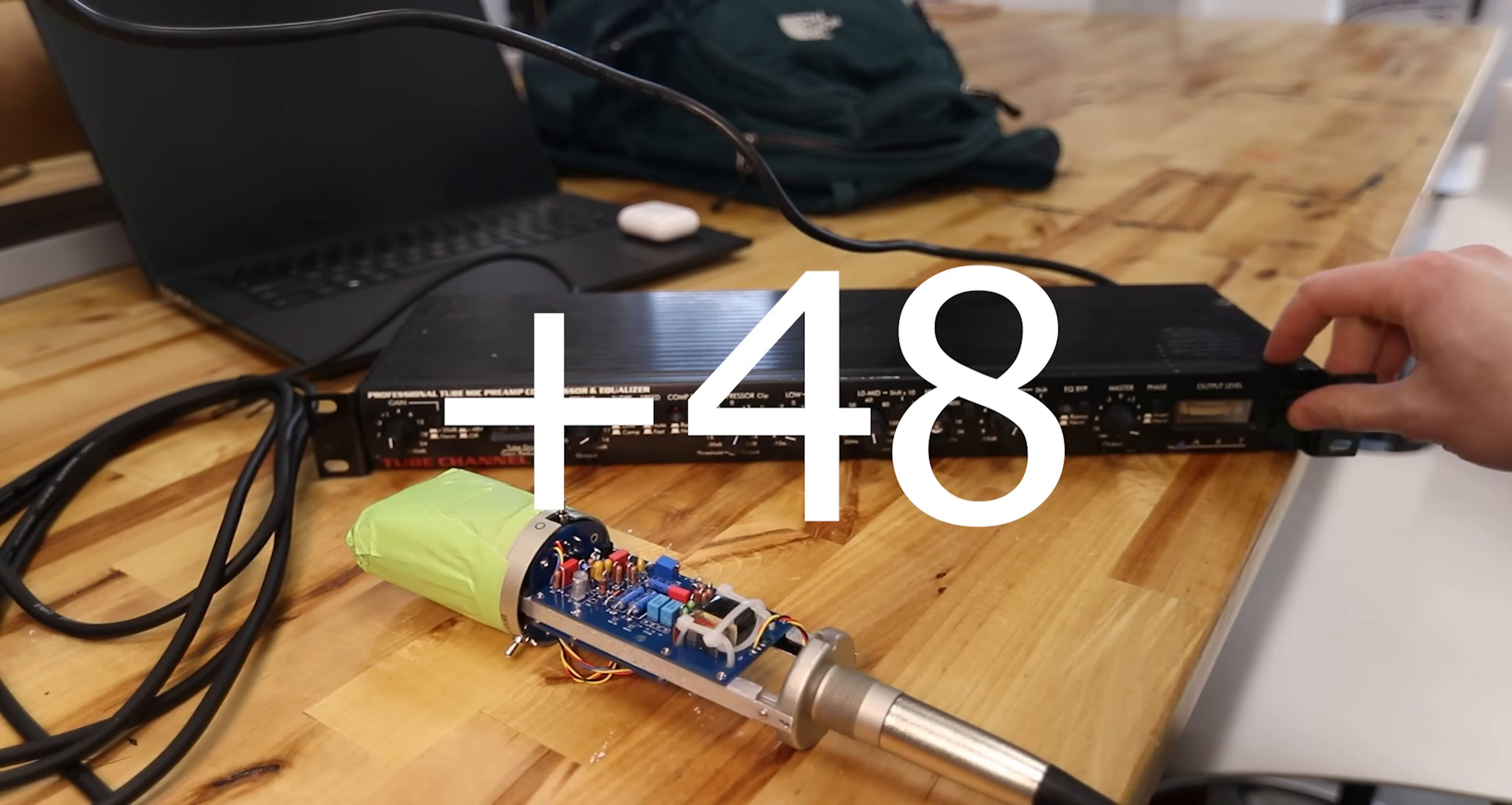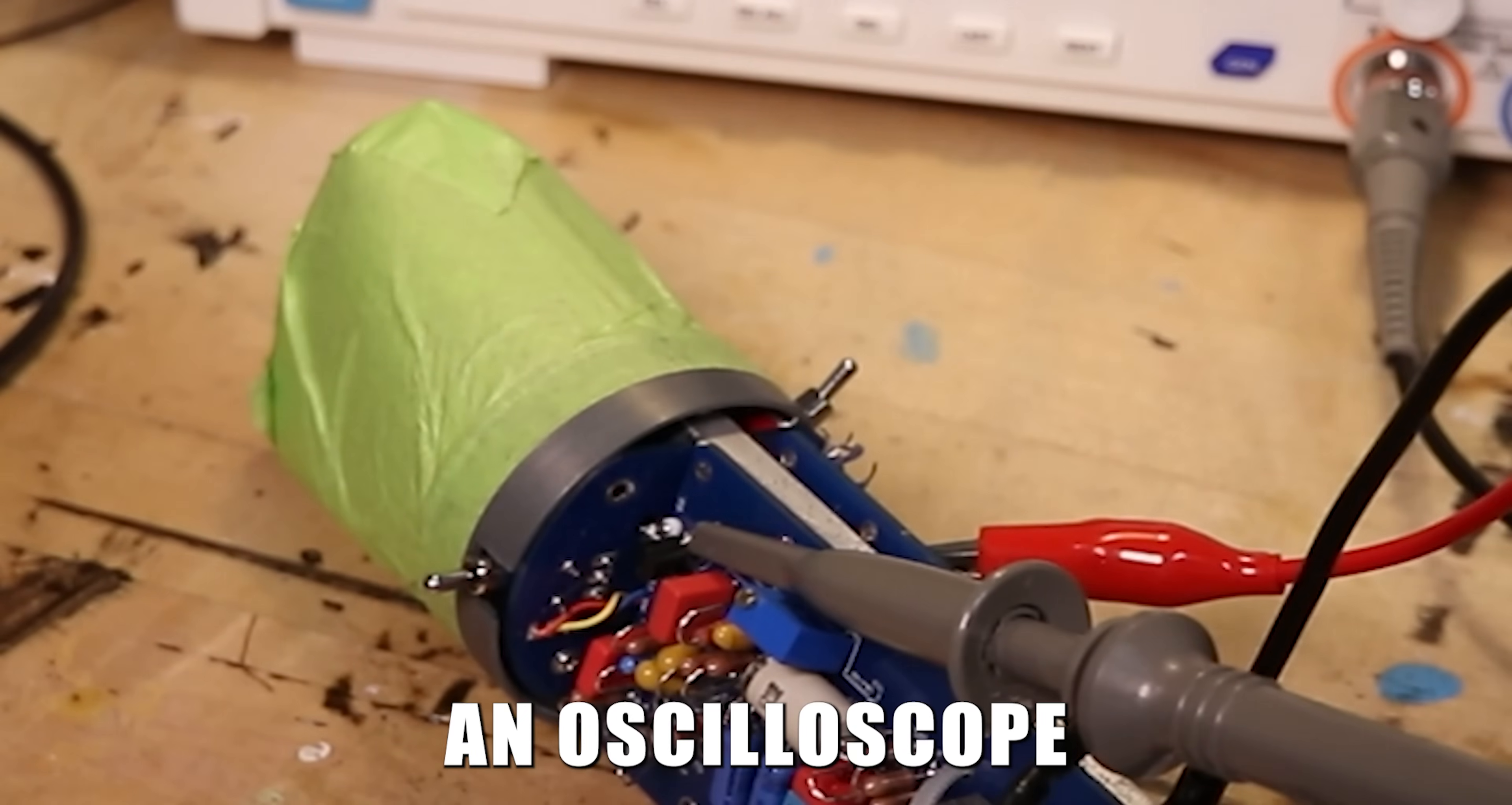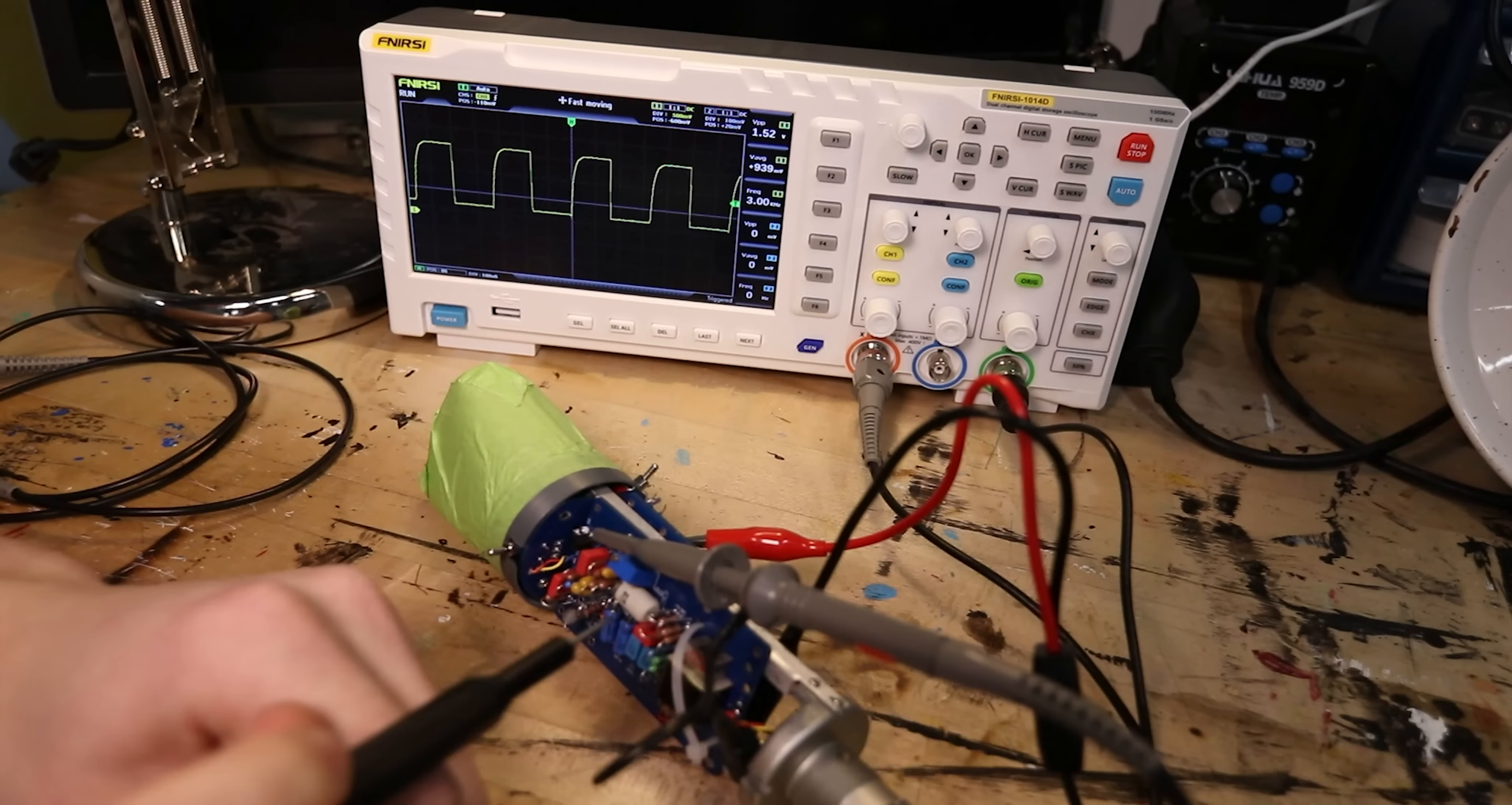First, I attached the mic to a phantom power source. Then I attached an oscilloscope at the FET drain. An oscilloscope within a DAW would also work the same for this process.